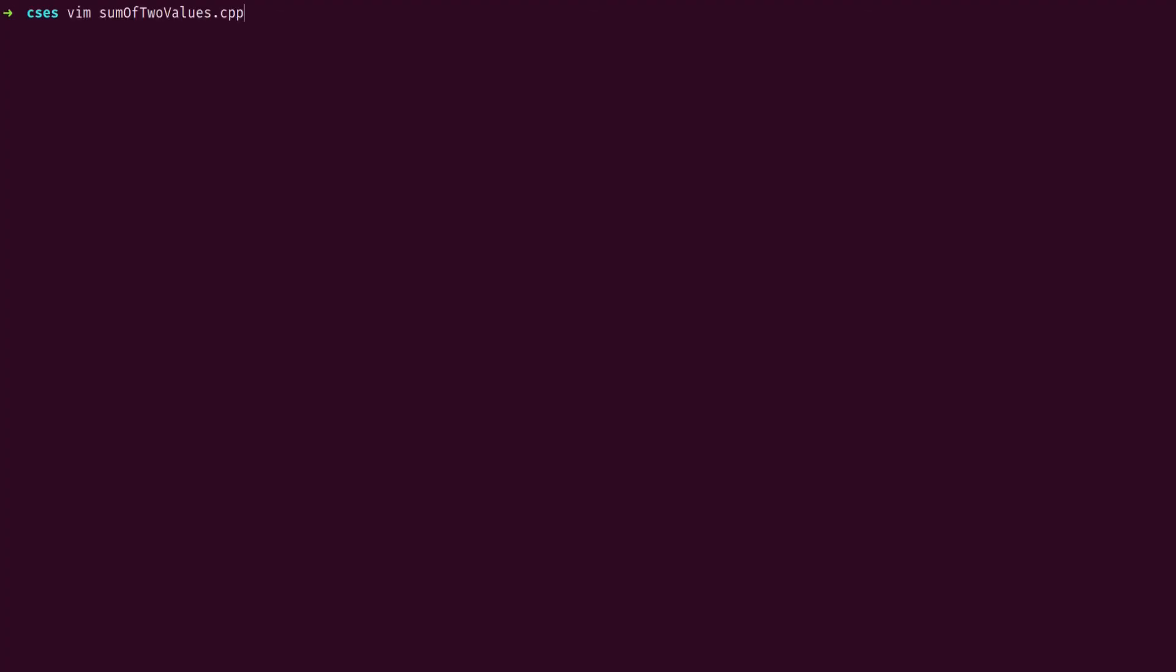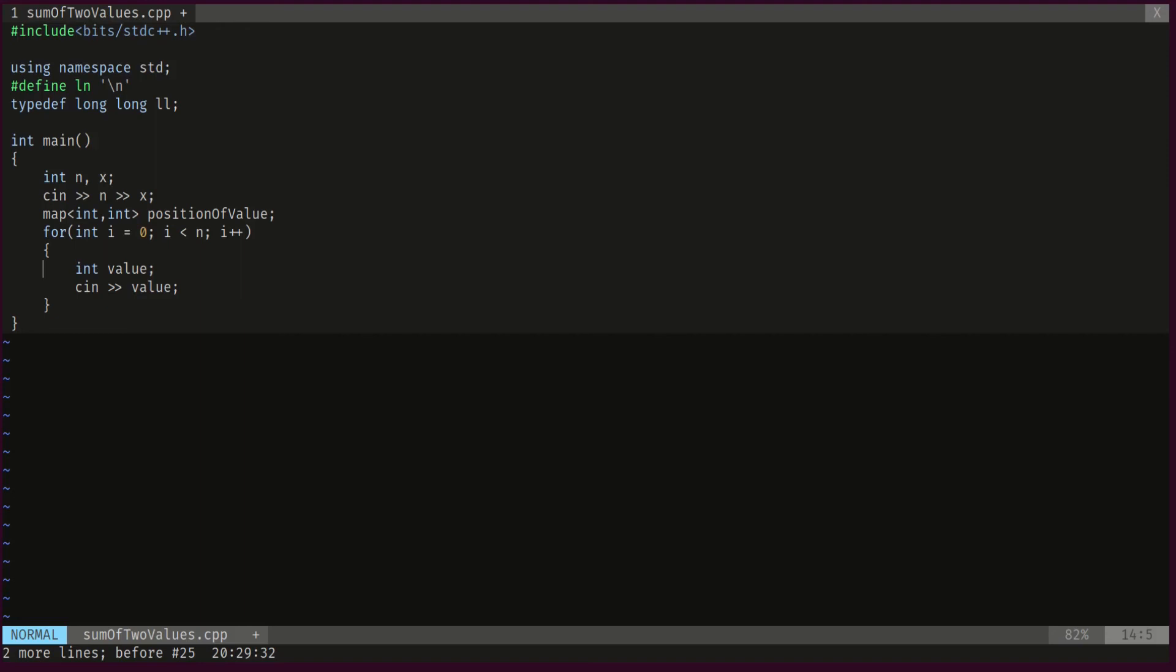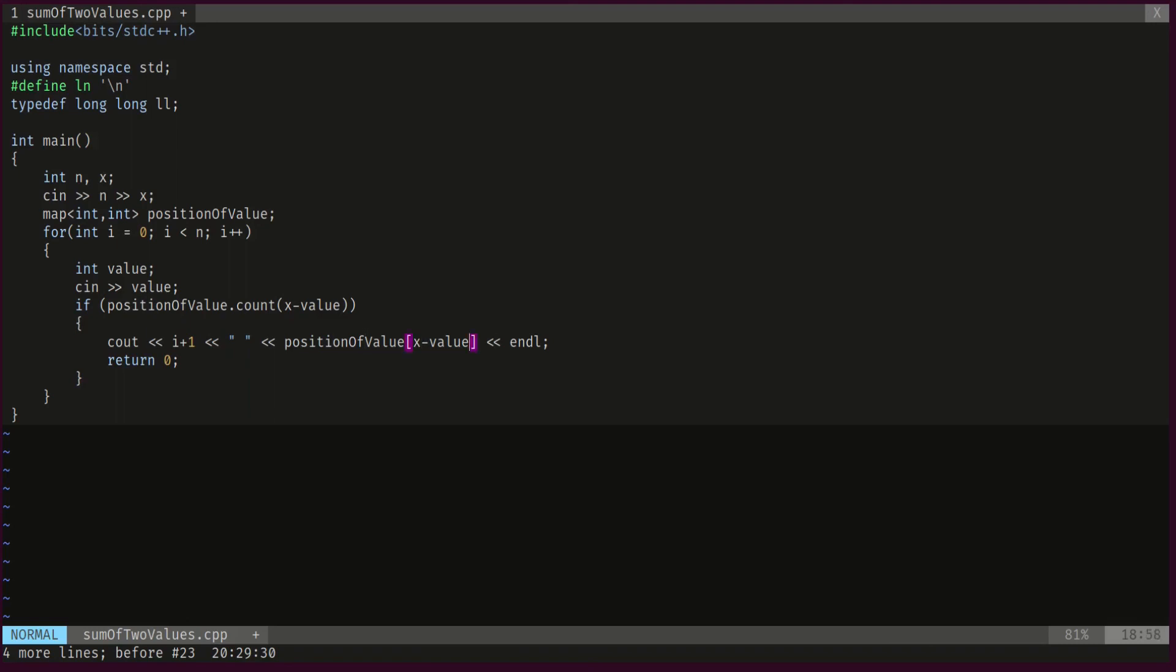So let's check out the code. We start by reading n and x. And then we declare our map, which represents the position of some value. Then we go through all the elements from 1 to n. We scan the value. Then we perform the first check, which is to check if we've already seen the value x minus value. If we've already seen that, we just take x minus value plus value and we get x. So if that's the case, we're just gonna print our actual index which is i plus one and the index of x minus value. And that's it. Otherwise, if that's not the case, we will just add this value to the values we've seen so far. And if we did not find a match, it means that there are no solutions and that's why you have to print impossible at the end.